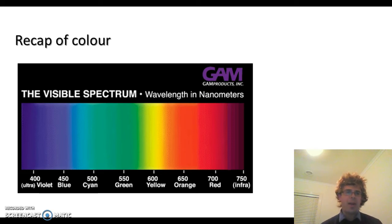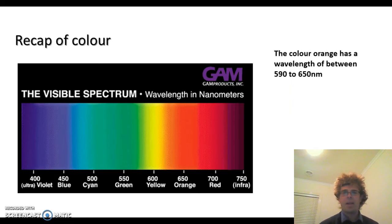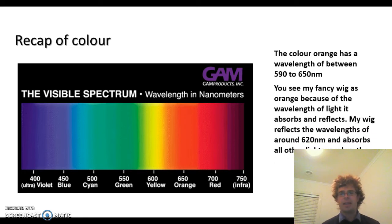So if we were to have a look at the visible light spectrum there, you can see that orange is around about 650, and what we mean by that is 650 nanometres. So the colour orange is anywhere between 590, 650, 670 nanometres, depending on its shade of orange. And all that means is it is reflecting those colours.